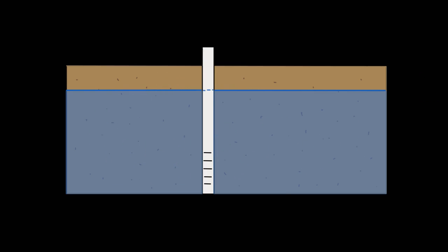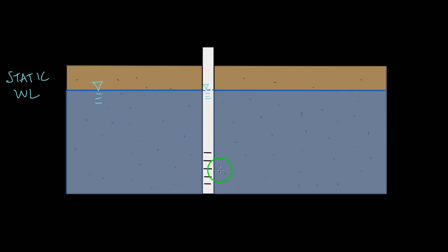The first thing we need to define and look at is what's called the static water level. The static water level is the elevation of water in that aquifer when nothing is happening to that aquifer — nothing's getting pumped out, nothing's getting put in, it's just the normal natural elevation of water in the aquifer. The static water level is the same outside of the well as it is inside, because the well is open to the aquifer through the screen, and water can enter the well through that screen and balance out at the static water level.